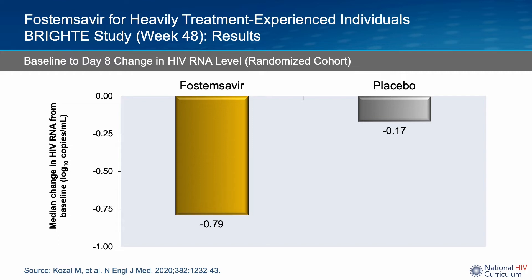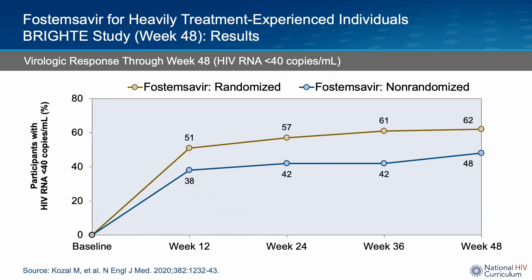This is the primary outcome: change in HIV RNA or viral load after eight days of either Fostemsevir or placebo added to the baseline failing regimen, all in the randomized cohort. Clearly, Fostemsevir led to significantly better reductions in HIV RNA level compared to placebo. Here you can see the proportion of participants who achieved a suppressed viral load over time, including both cohorts. At 48 weeks, 62% of those in the randomized cohort and 48% in the non-randomized cohort achieved a viral load below 40 copies. While this may seem relatively low, recall that participants had multi-class drug resistance and very few antiretroviral options remaining — so this is a very positive and notable finding.